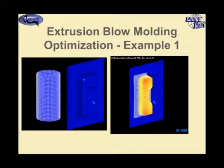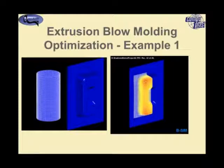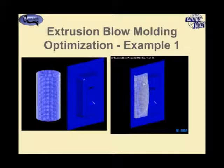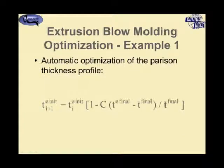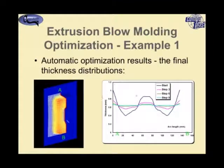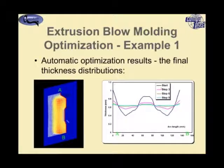These corners are thinning out because we're starting with a uniform parison, and we might be getting too thin or below our critical values, making parts easily damaged. The optimization formula is essentially the same as for the preform. Here we see the optimization results: step 1 shows a very large final thickness variation along position A-B — along the arc length — and by step 9 we have a much more uniform thickness than the initial condition.